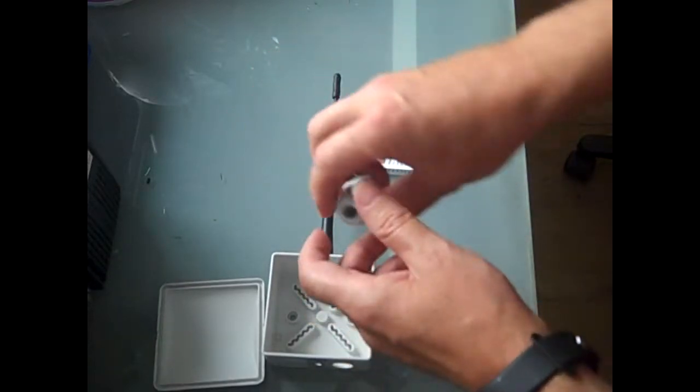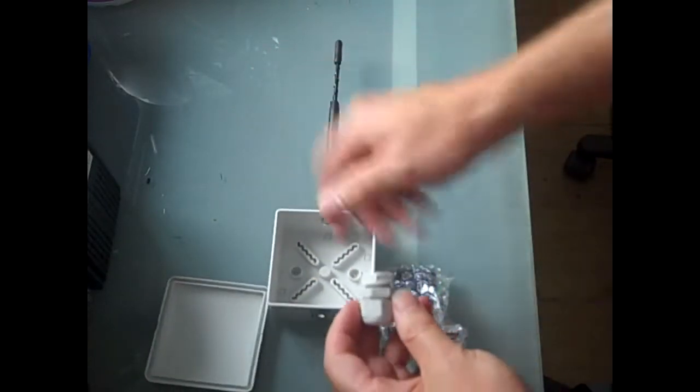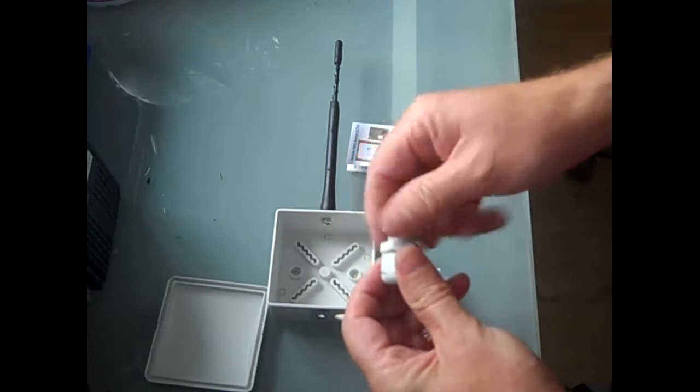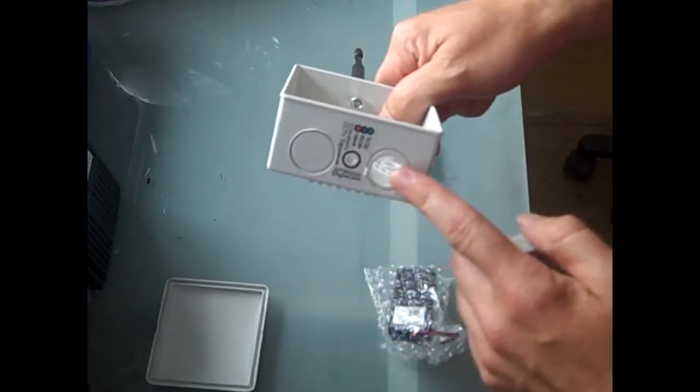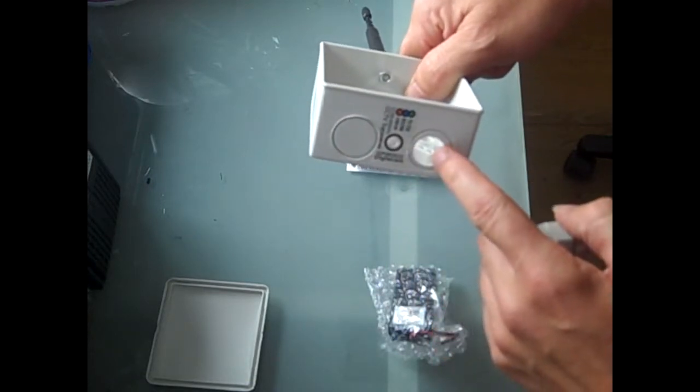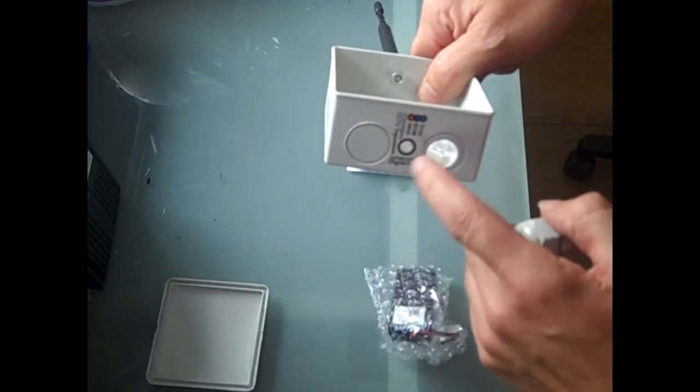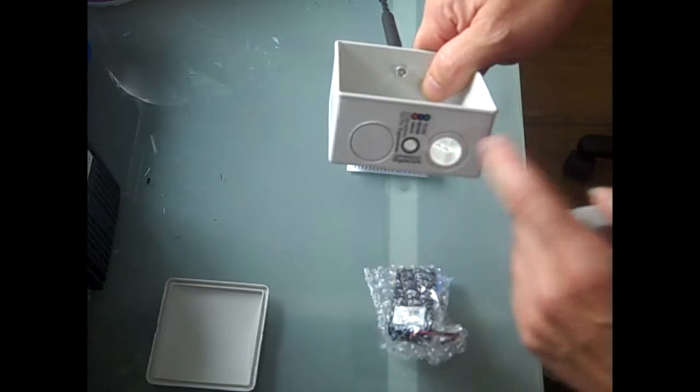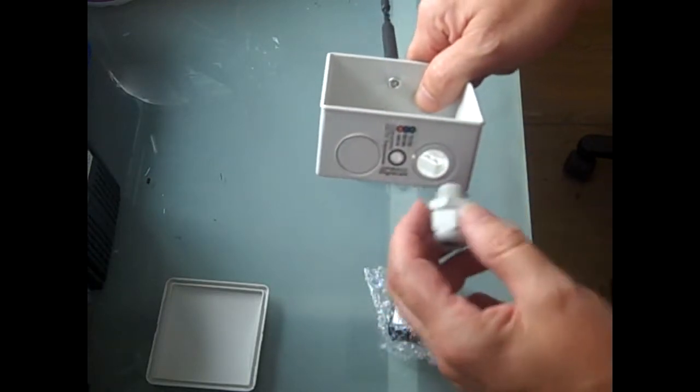The next thing to do is to put the gland on. This unit has been previously drilled, but when you get it they'll be blank like this. So if you have a twin unit you'll need to drill two holes, or a single unit depending on whether you're left or right will need to be drilled.